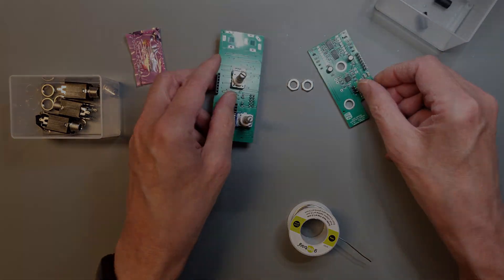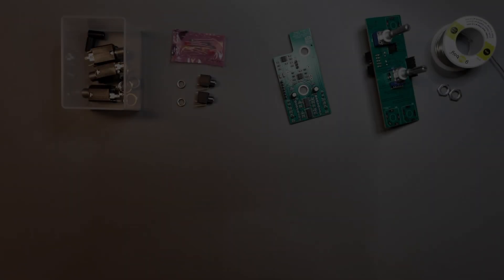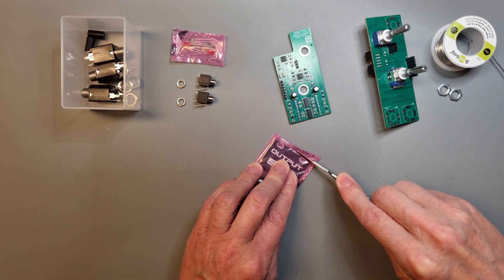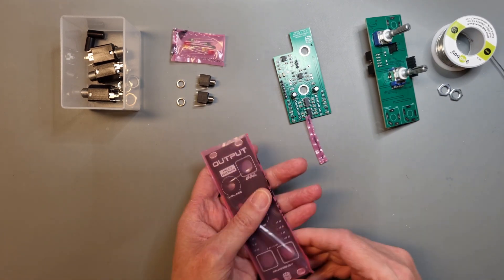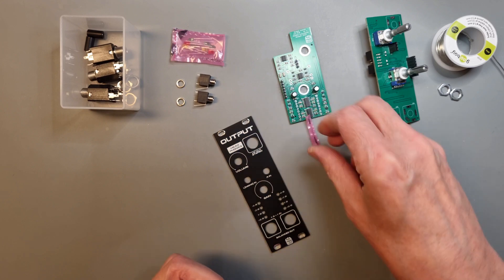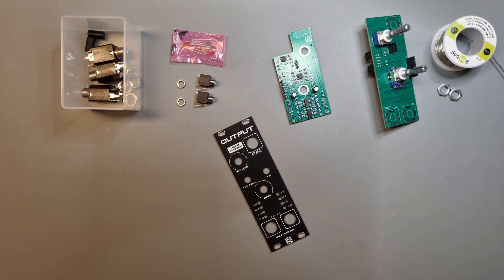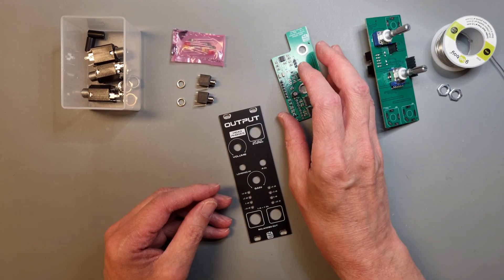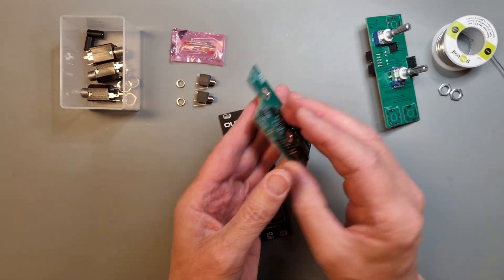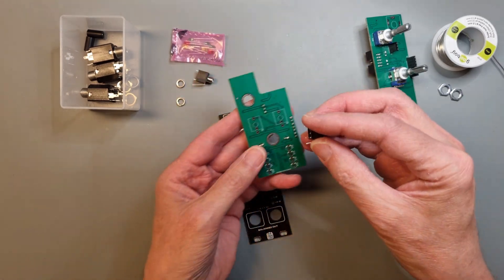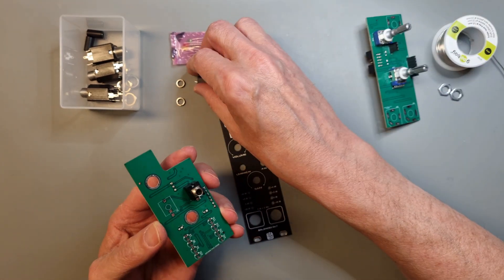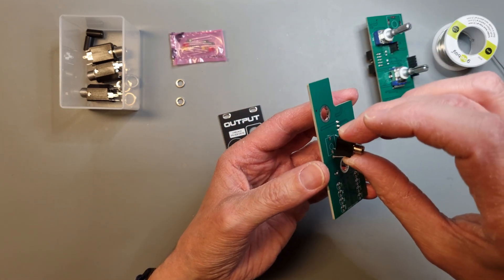We have arrived at probably the trickiest part of the build, and that is the assembly of the input jacks. We will need the front panel for this, so you can remove that from the protective bag. The Thonkiconn jacks should be mounted on the top side of the control PCB. Carefully place them onto the PCB and solder the long ground leg first.